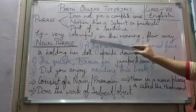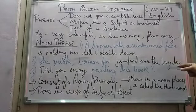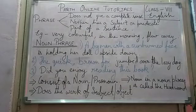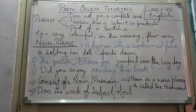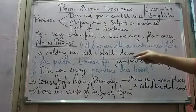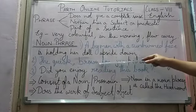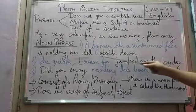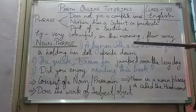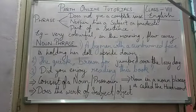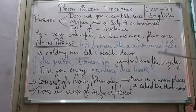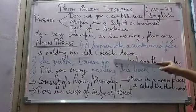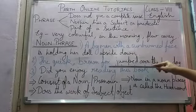Moving on to the second sentence: 'The quick brown fox jumped over the lazy dog.' The noun phrase is the subject of the sentence. As you can see, 'the quick brown fox' is the noun phrase — it is the subject. We are describing about the noun, the head word 'fox.' So 'the quick brown fox' is the noun phrase here.